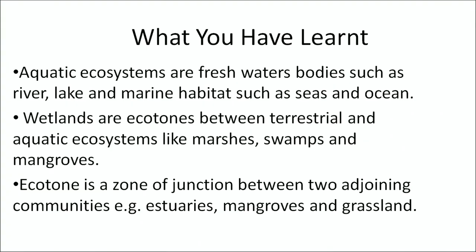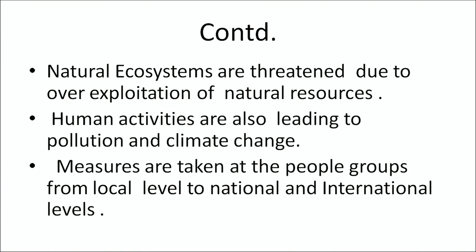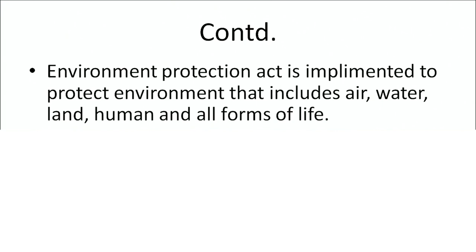Thank you Dr. Lakshmirula for sharing information related to natural ecosystems such as the aquatic system — freshwater and marine — major Indian ecosystems and threatened ecosystems such as mangrove and wetland. To recap the main points: aquatic ecosystems are freshwater bodies such as rivers and lakes and marine habitats such as seas and oceans. Wetlands are ecotones between terrestrial and aquatic ecosystems like marshes, swamps and mangroves. Ecotone is a zone of junction between two adjoining communities — examples include estuaries, mangroves and grassland. Natural ecosystems are threatened due to over-exploitation of natural resources and human activities leading to pollution and climate change. Measures are taken at local to international levels. The Environment Protection Act is implemented to protect the environment including air, water, land, humans and all forms of life.